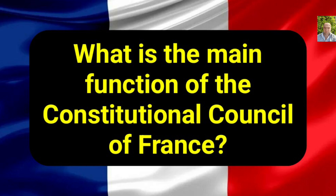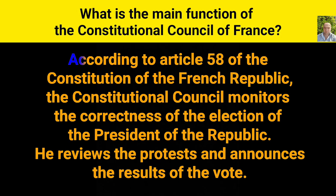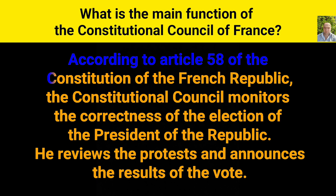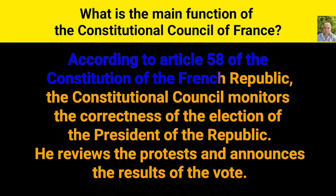What is the main function of the Constitutional Council of France? According to Article 58 of the Constitution of the French Republic, the Constitutional Council monitors the correctness of the election of the President of the Republic. It reviews the protests and announces the results of the vote.